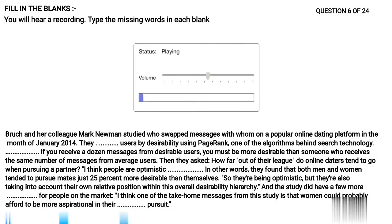Brooke and her colleague Mark Newman studied who swapped messages with whom on a popular online dating platform in the month of January 2014. They categorized users by desirability using PageRank, one of the algorithms behind search technology. Essentially, if you receive a dozen messages from desirable users, you must be more desirable than someone who receives the same number of messages from average users. And then they asked how far out of their league do online daters tend to go when pursuing a partner. I think people are optimistic realists. In other words, they found that both men and women tended to pursue mates just 25% more desirable than themselves.